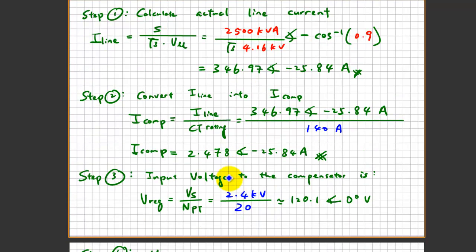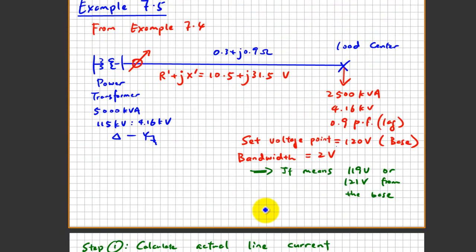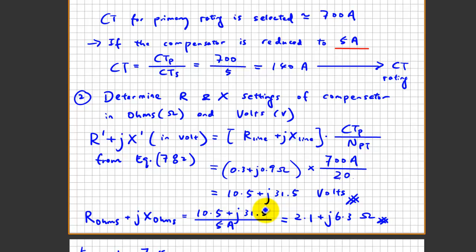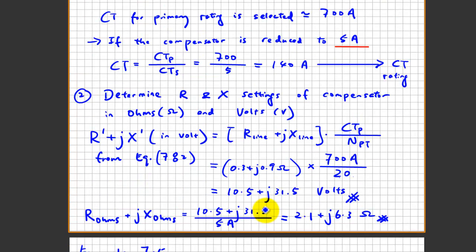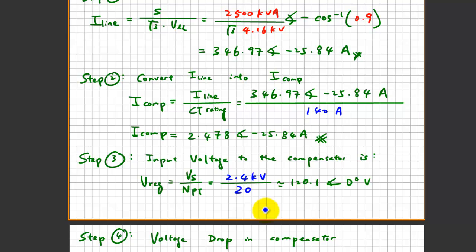The next step is to find the input voltage to the compensator, denoted V_regulator = V_S / N_PT. V_S is 2.4 kV divided by the potential transformer turns ratio of 20, giving 120.1 V at 0°.